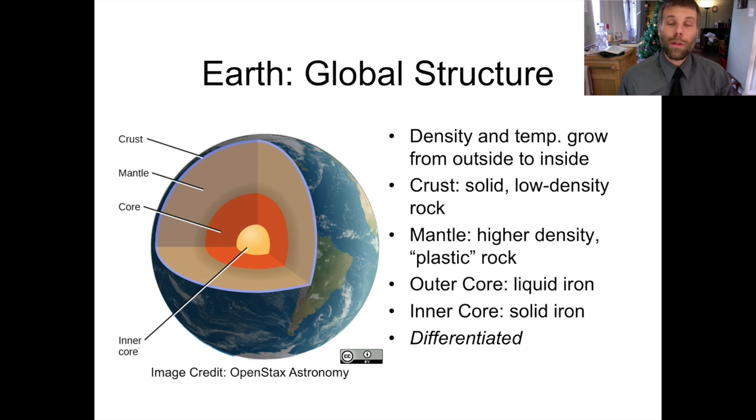This structure, where the Earth is organized into different layers based on the density of the material that makes them up, is called differentiated or differentiation. So the actual structure is differentiation, and we say that the Earth is differentiated.